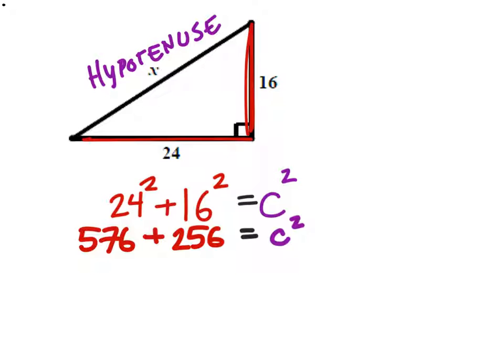Now when we add both of these, we get 832. This is squared. We don't want C squared, we just want C, right?